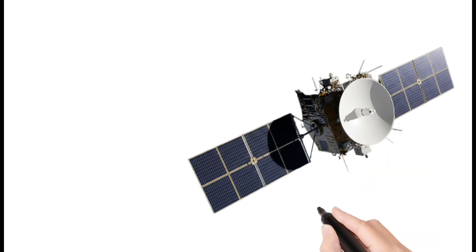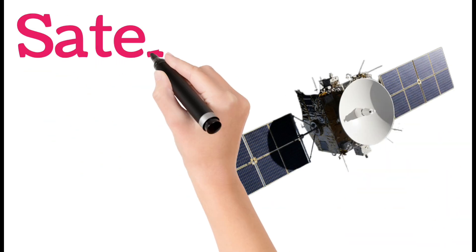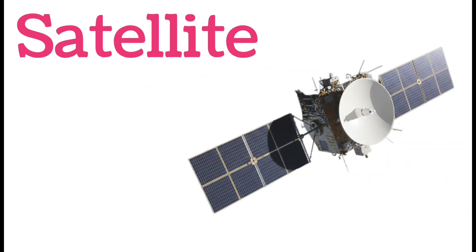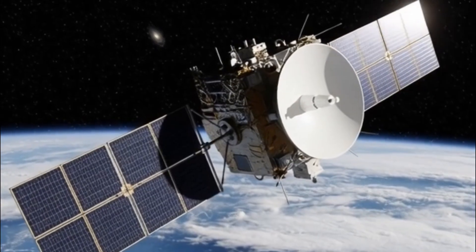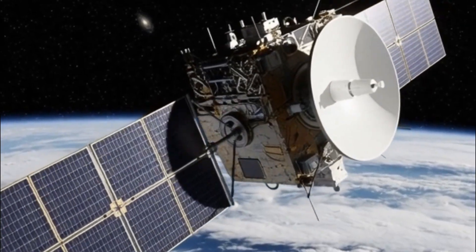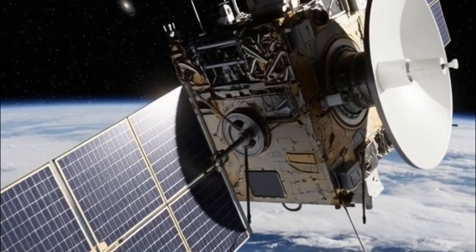Next, Satellite. A satellite orbits a planet. Some are natural, some are man-made. They help in communication and weather study. Satellites move in fixed paths.